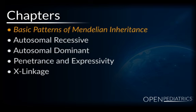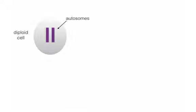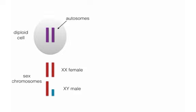Basic Patterns of Mendelian Inheritance. The basis for Mendelian inheritance is the fact that humans are a diploid organism. We call the non-sex chromosomes autosomes, and any individual will have inherited one copy of each autosome from each parent — one from mother, one from father. The sex chromosomes consist of two X's in females, and an X and a Y chromosome in males.